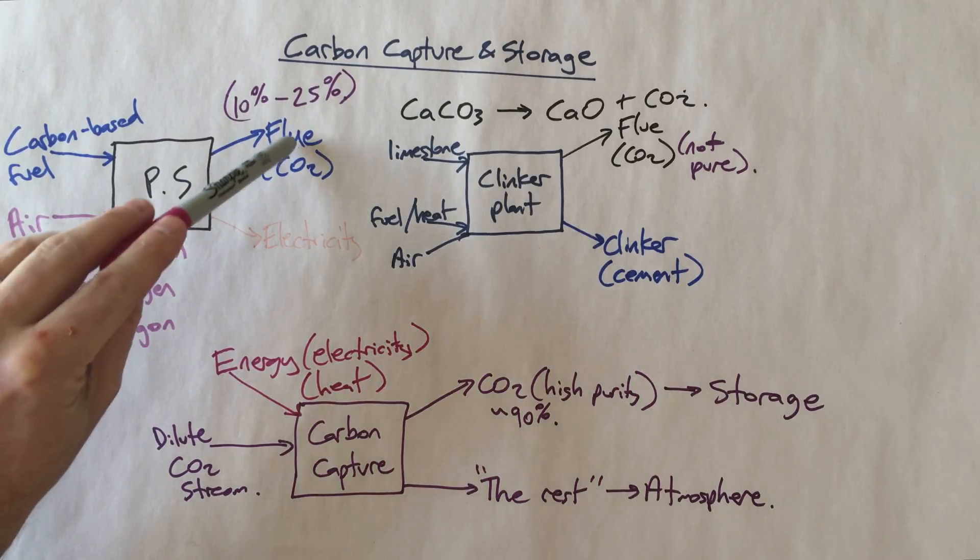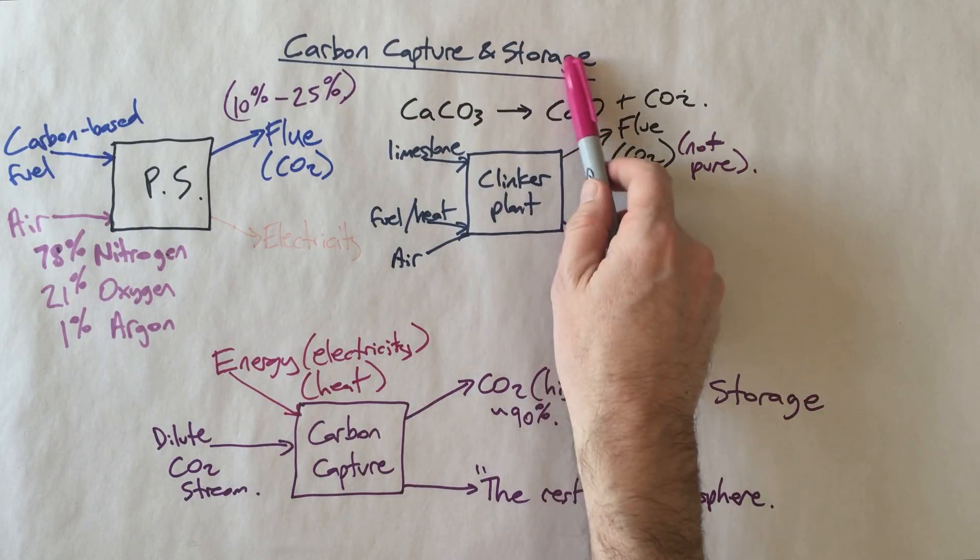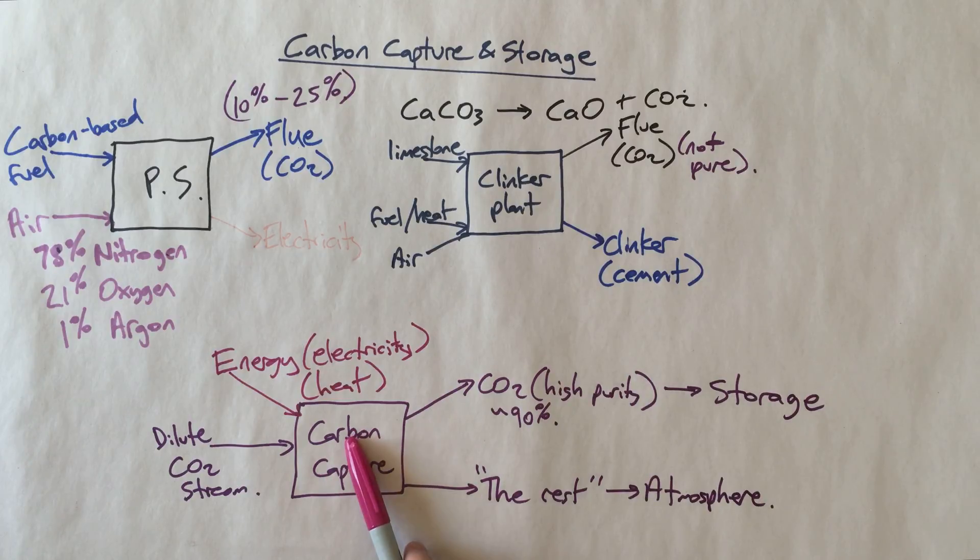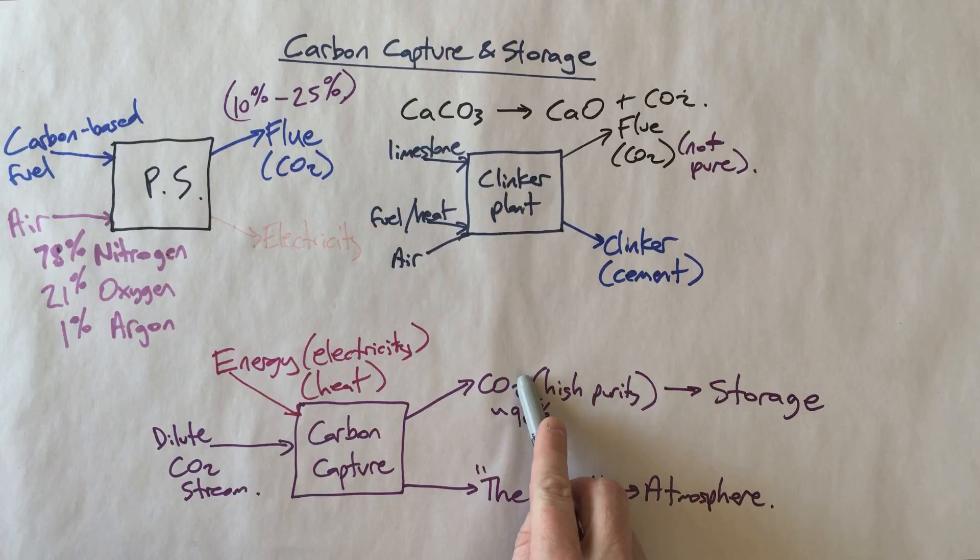We've got a problem of this dilute CO2 stream that's produced by our industry, we want to put it into the ground in a storage, and so we need what we call carbon capture to take that dilute CO2 stream and turn it into a high purity CO2 stream. And in the next talk, I'll talk to you a little bit more about how we might go about doing that.